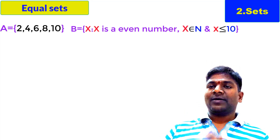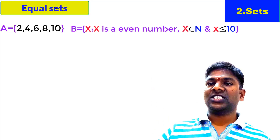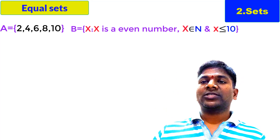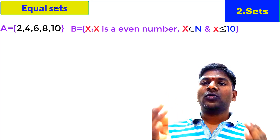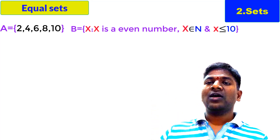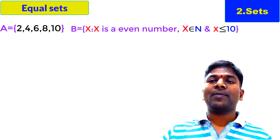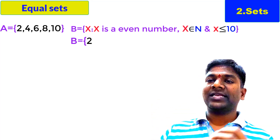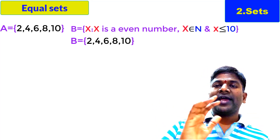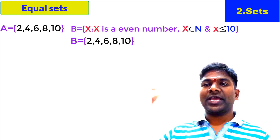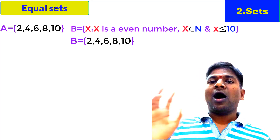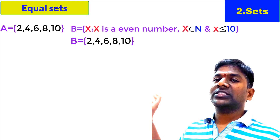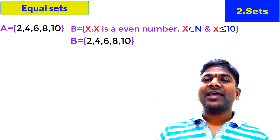All the elements of set P are represented by x. 'Such that' means: how is x? X is an even number and x belongs to N, so x is an even natural number. Even natural numbers are 2, 4, 6, 8, 10, 12, 14, and so on. But here the condition is x should be less than or equal to 10, so we take up to 10. The elements of set B are 2, 4, 6, 8, 10. When you observe, all the elements of set A are in B, so A subset B — this is the first condition satisfied. All the elements of B are in A, so the second condition, B subset A, is also satisfied. From these two conditions, we clearly say A is equal to B.